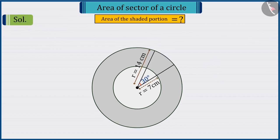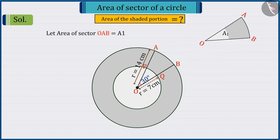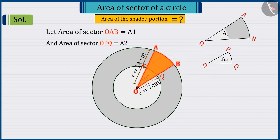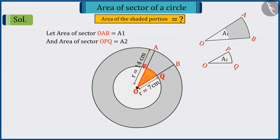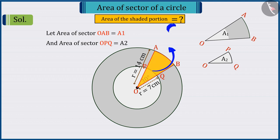First, let's name the disc according to the given information. Let A1 and A2 be the areas of sector OAB and OPQ respectively. So, can you determine the value of A1?